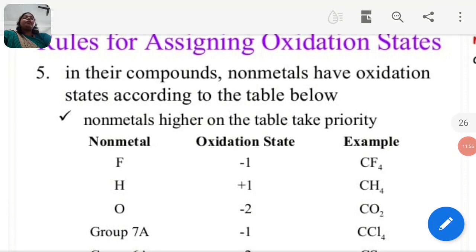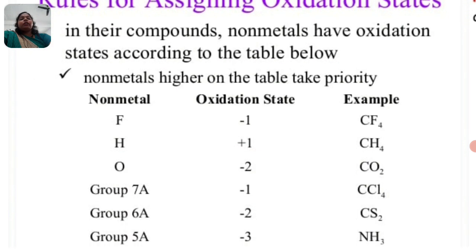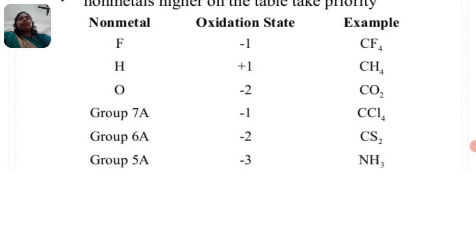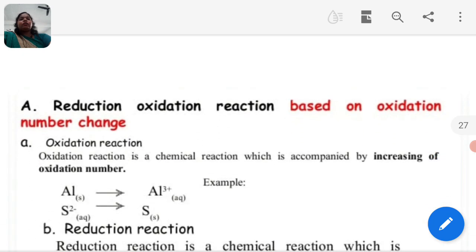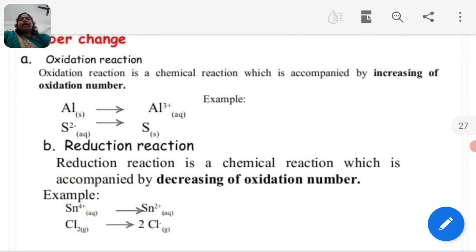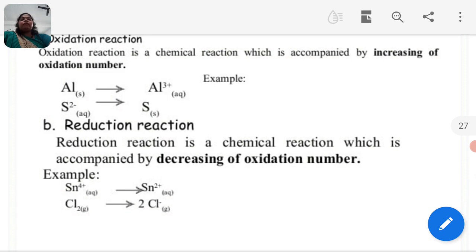In compounds, non-metals have oxidation states according to the following: for H2O, hydrogen is plus 1 and oxygen is minus 2. Group 7A elements have oxidation state minus 1; Group 6A elements minus 2; Group 5A elements minus 3. Oxidation reaction is a chemical reaction accompanied by an increase of oxidation number. Reduction reaction is a chemical reaction accompanied by a decrease of the oxidation number.